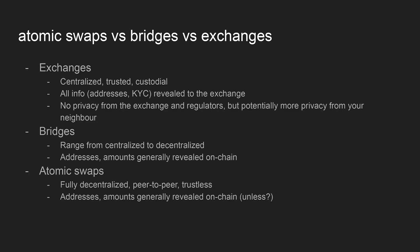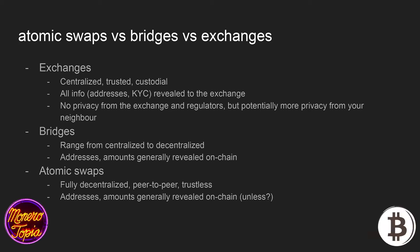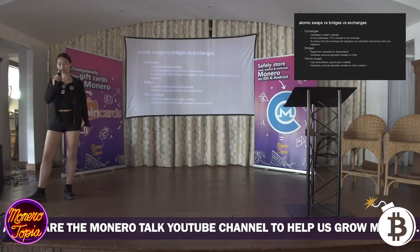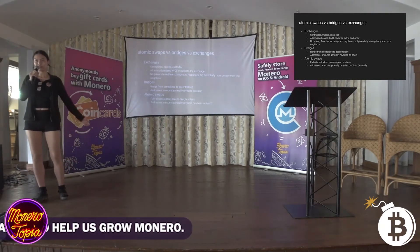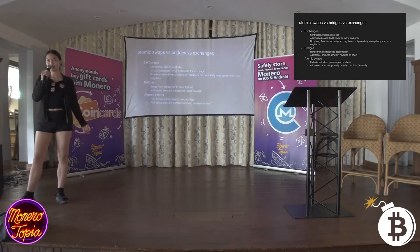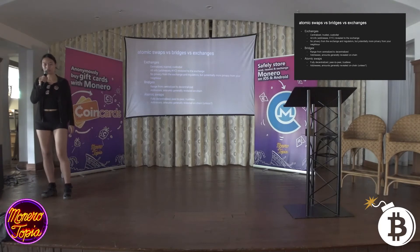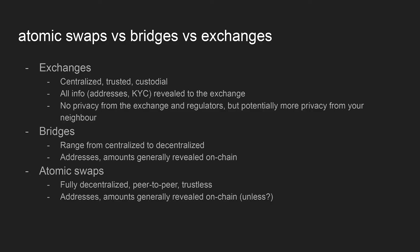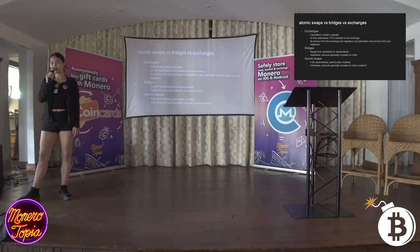A bit about the why I started this project: currently there are a few methods you could use to get Monero. One is a centralized exchange, probably one of the easiest ways, however it's centralized, trusted, and custodial — not private at all. Everything about yourself is revealed to the exchange because they want KYC. Maybe one day the government decides to crack down and say no more privacy coins on centralized exchanges — we're already kind of seeing that. There are also bridges, but as far as I know there aren't really any Monero bridges currently working.